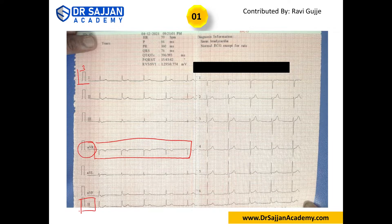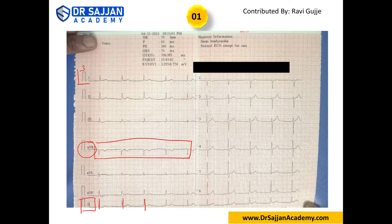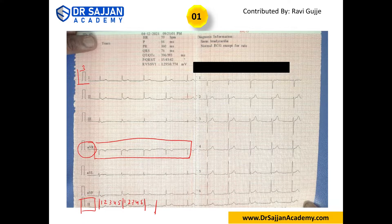The third point is rhythm, which we assess in lead two — the long strip. We measure from the first R to the second R, then second R to third R, counting boxes to determine regularity. Looking at the rhythm: one, two, three, four, five — and again one, two, three, four, five. It's five boxes every time, so the rhythm is regular.